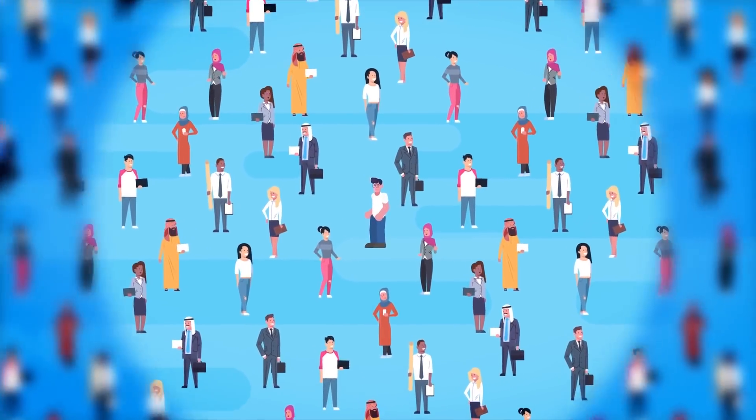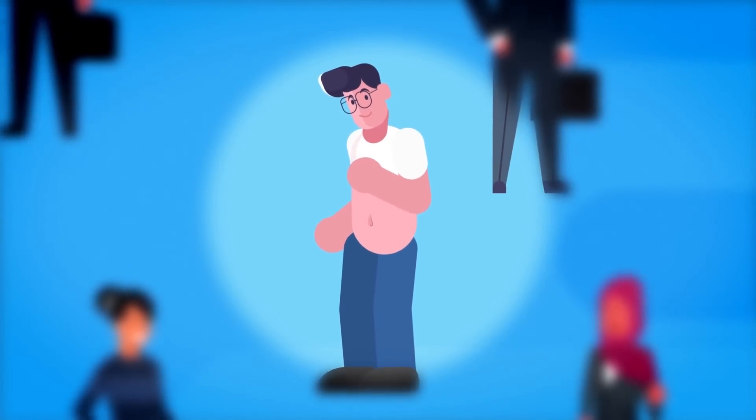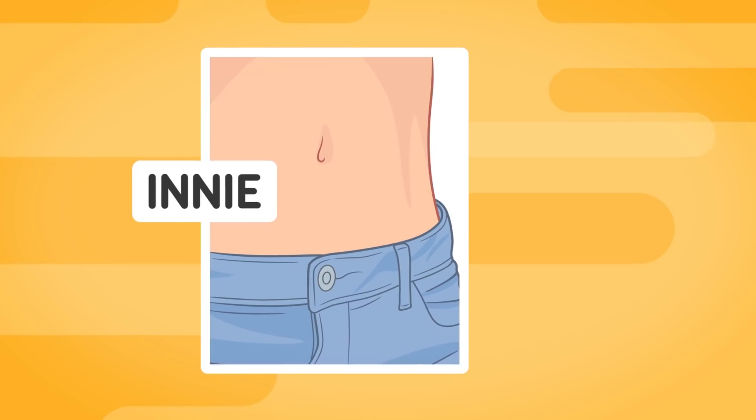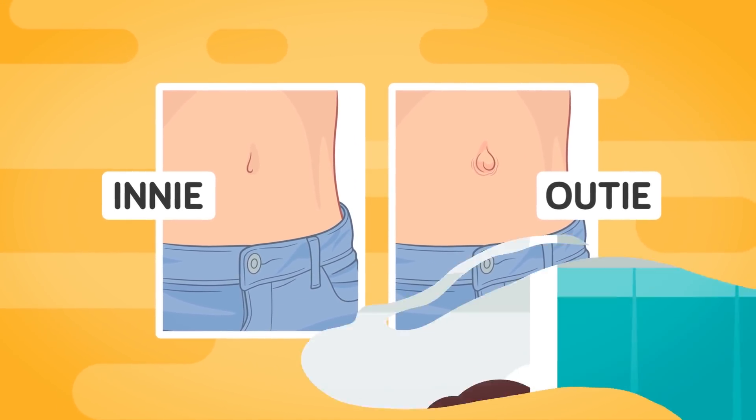It's one of the few things that all human beings have in common. We all have one, even if they might look a little bit different. Of course we're talking about belly buttons, innie or outie belly buttons. Why do some people have them? Why do humans even have belly buttons in the first place?